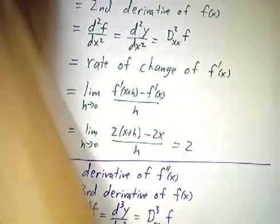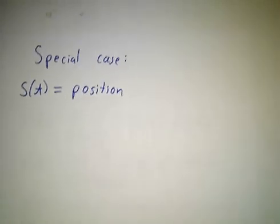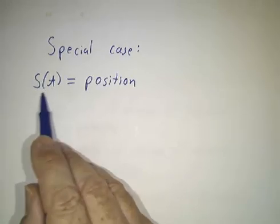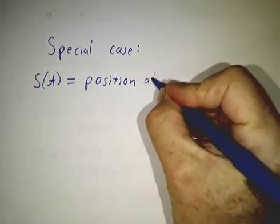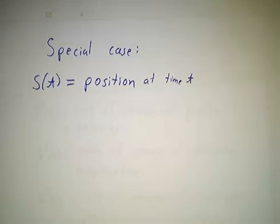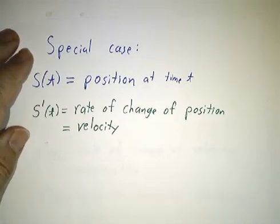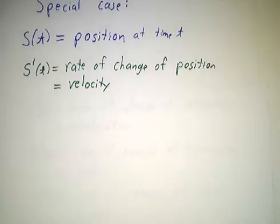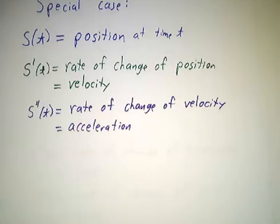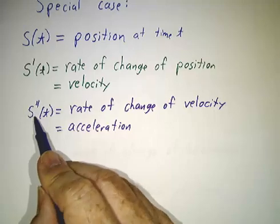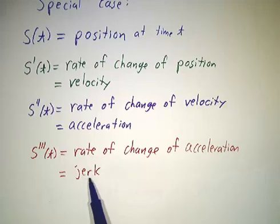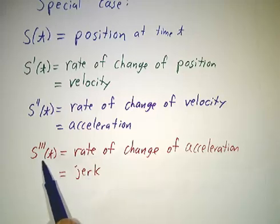Okay, now there's a particular instance where taking higher derivatives has real physical meaning. And that's where we have a position as a function of time. So if s is a position at time t, then the rate at which that position is changing, we usually call that velocity. That's the first derivative. The derivative of velocity is called acceleration. So acceleration is the second derivative of position. The derivative of acceleration is called jerk. That's the third derivative of position.